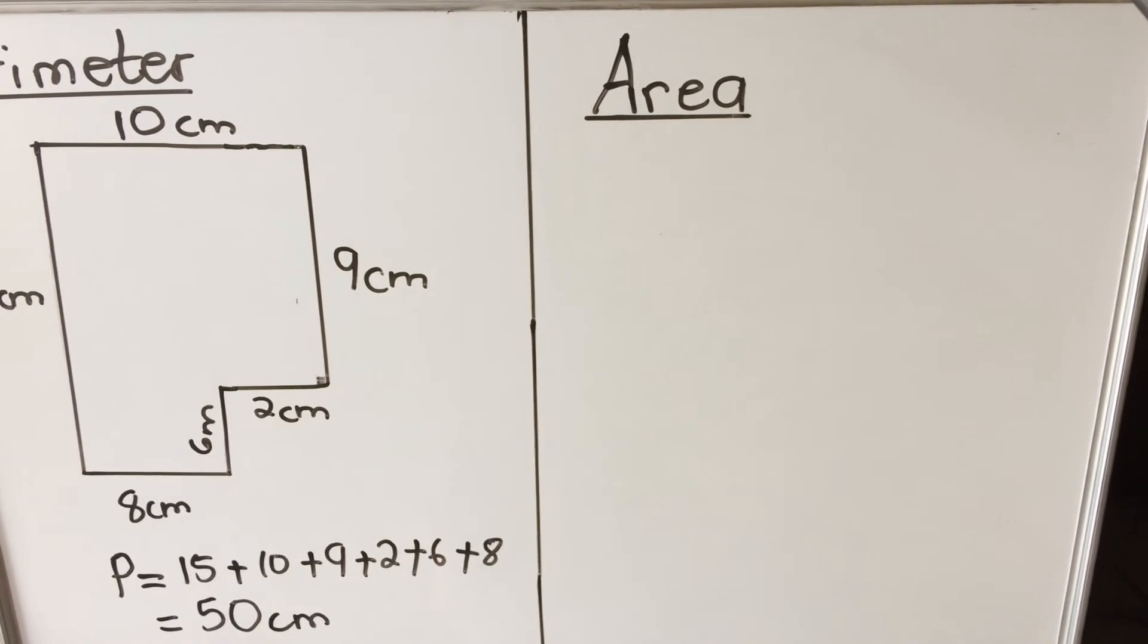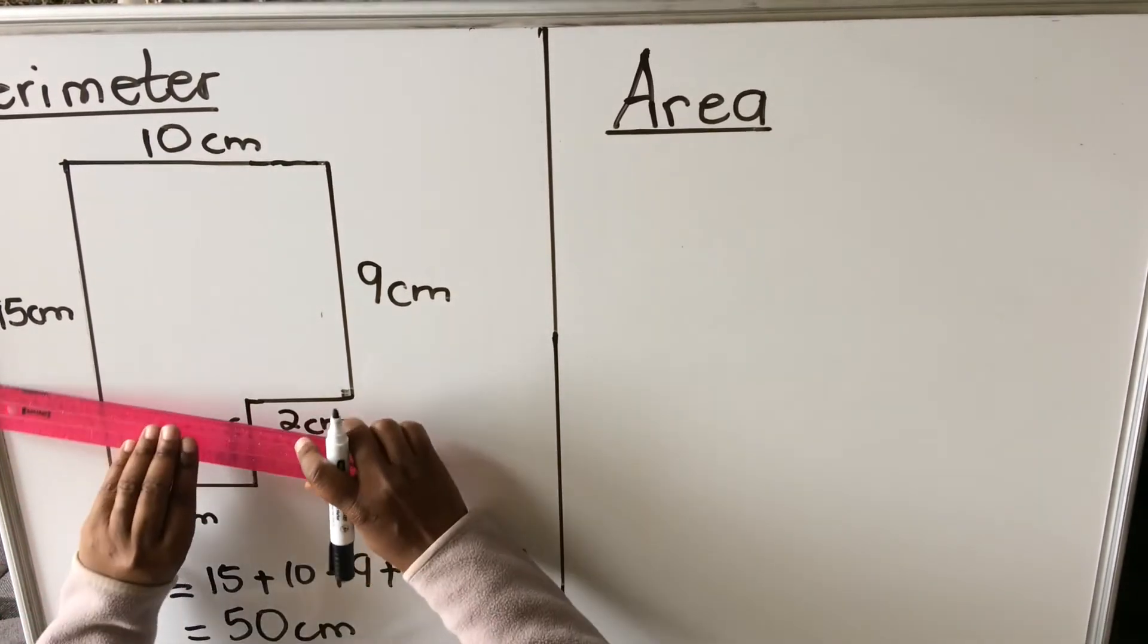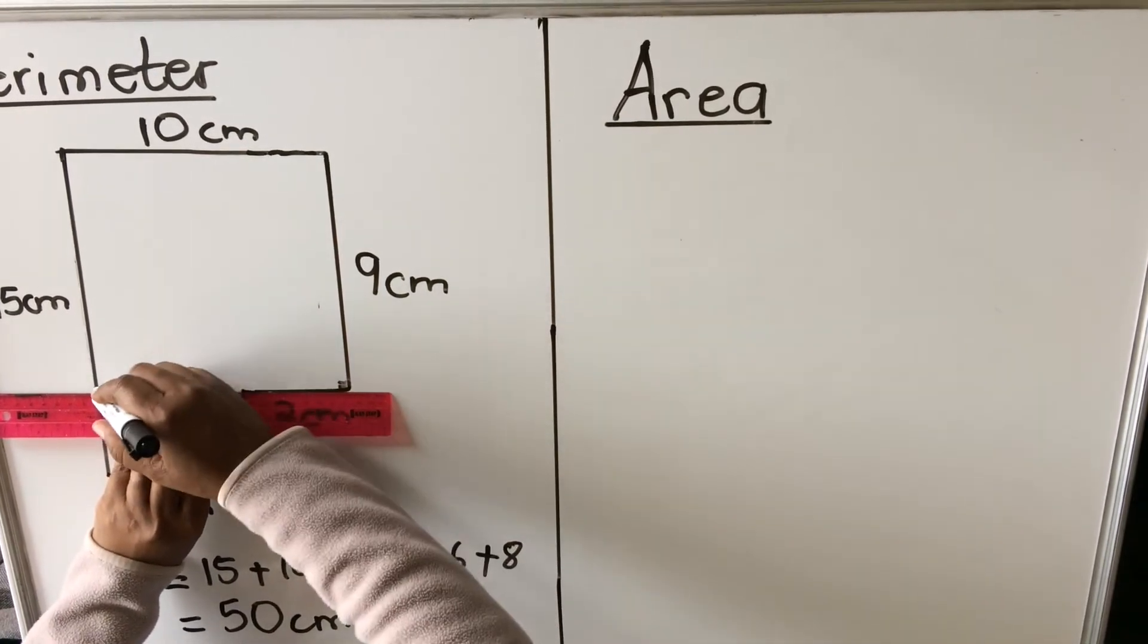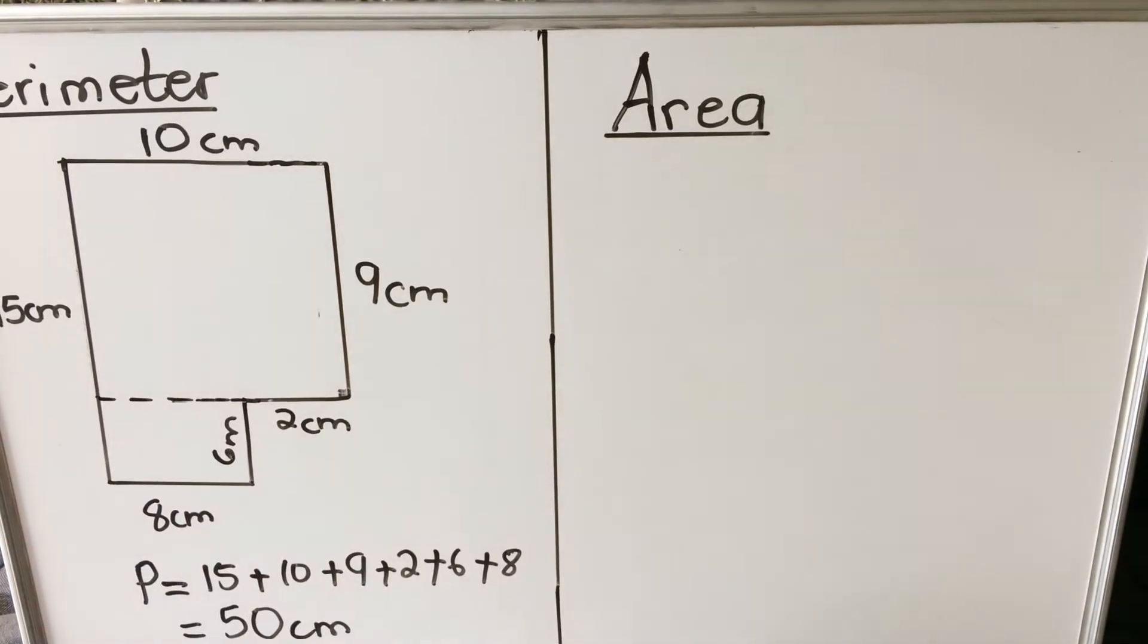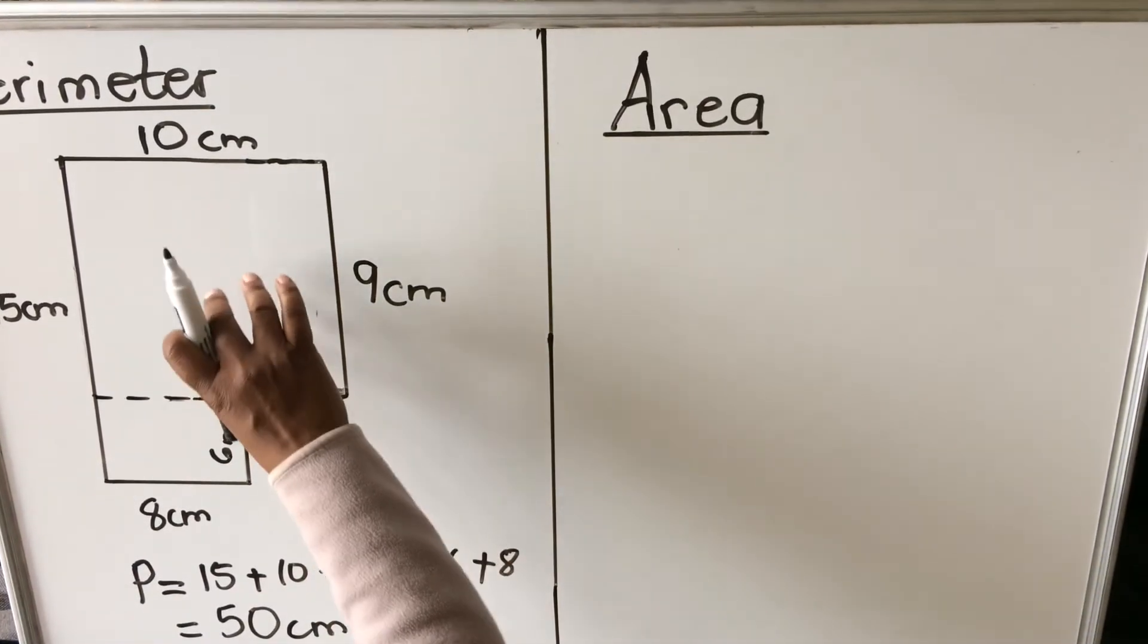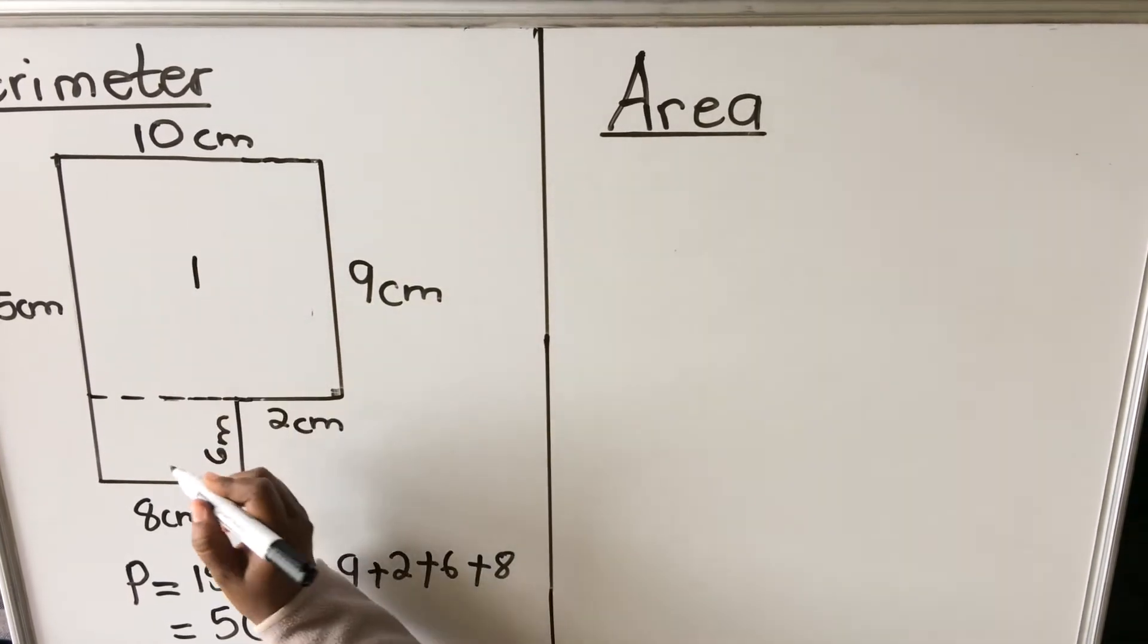What you do is you cut it into the shapes that you know. So if I look at this one, if I cut here, I'll have two rectangles. I'll have a rectangle there and a rectangle here. So this we'll call rectangle 1 and this one we'll call rectangle 2.